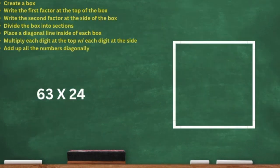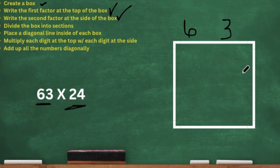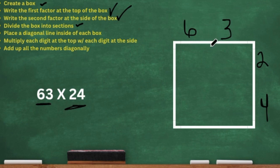We're going to try another one. Here we have a two-digit by a two-digit. The first equation was a two-digit by a one-digit, so this one is going to be a little bit more complicated. So we have our first factor 63 — we add the 63 at the top of the box like the CFS says — and then the second factor, which is 24, put it at the side. Always make sure you leave space in between both of your digits. When we divide the box into sections, we have to make sure there's space in the middle to allow that line to go down.